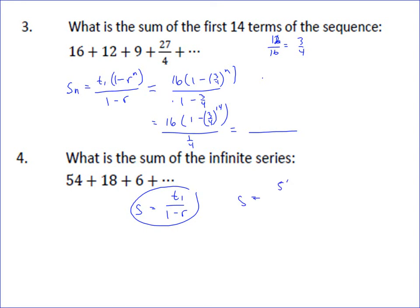And so the sum is going to equal, well, 54 is your first term. The ratio is 1 third, because 18 over 54 equals 1 third. 6 over 18 equals 1 third. So that gives you 54 over 2 thirds, which can be simplified by multiplying by the reciprocal of 3 halves, which is going to give you 81. So the sum of this infinite sequence, as it went on forever, is going to be 81.